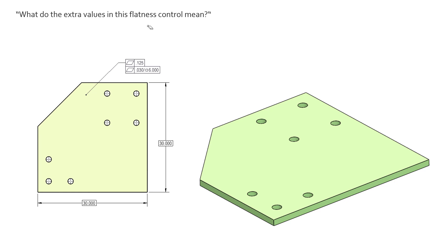This top feature control frame is pretty straightforward, just a normal flatness callout saying this surface, as highlighted here, the entire surface needs to be held to a flatness of an eighth inch. We see that this part is relatively large, 30 inches by 30 inches.